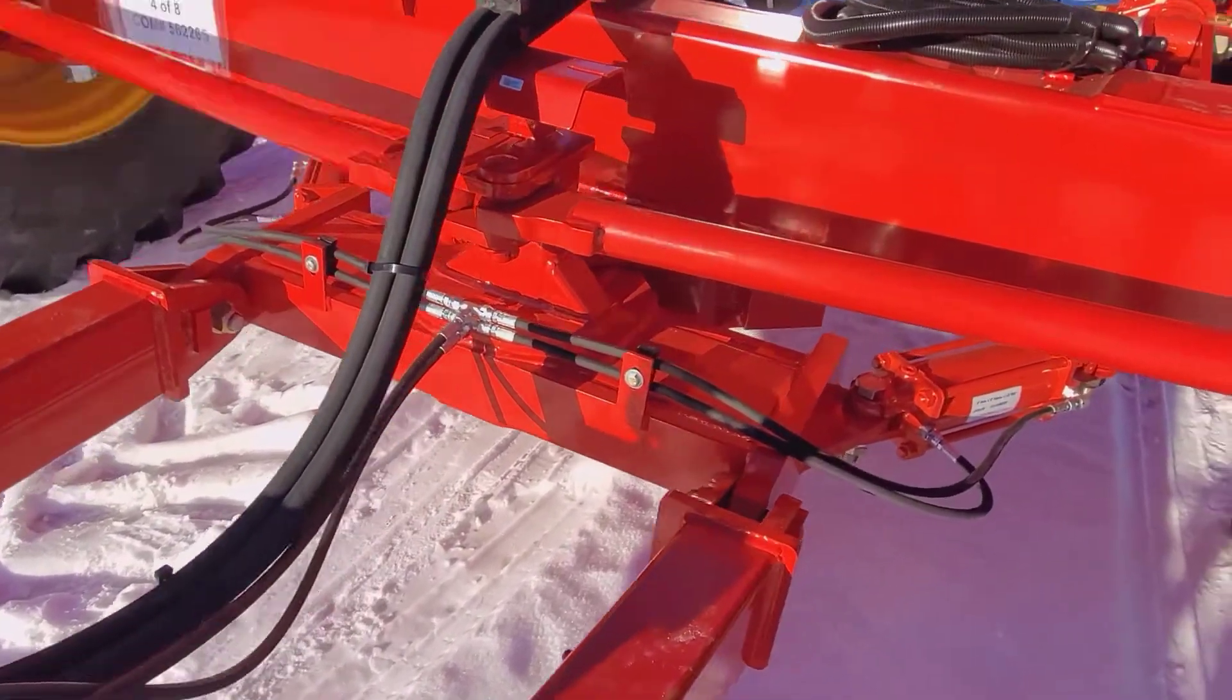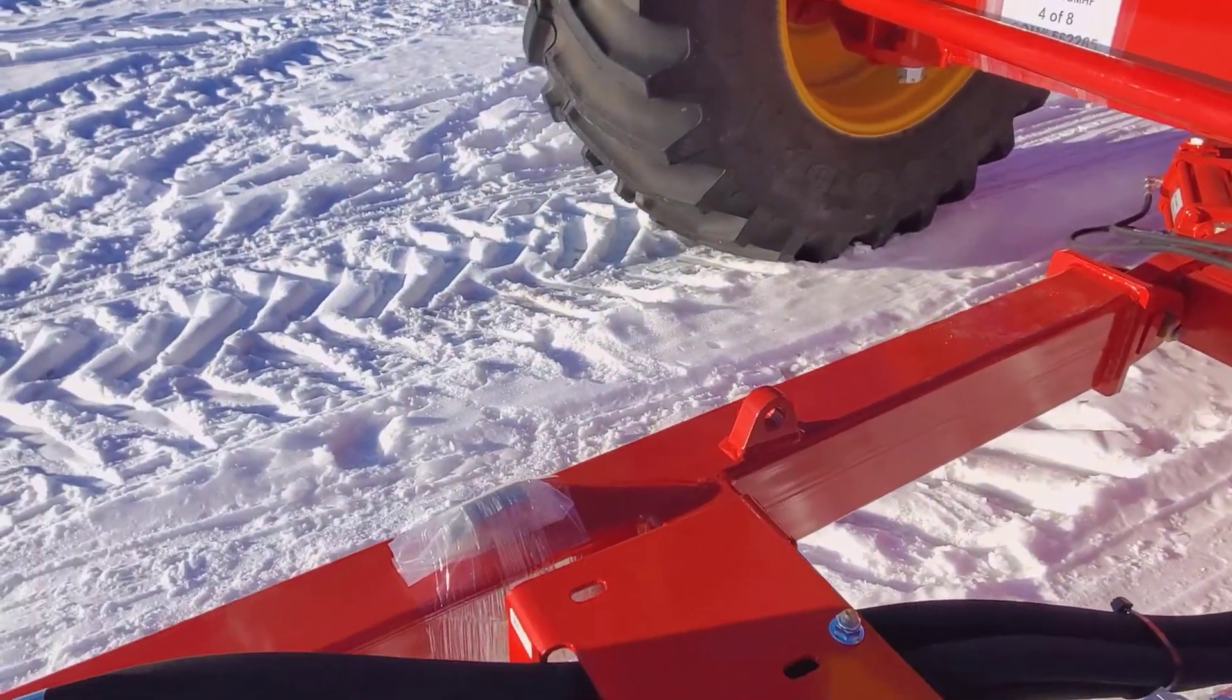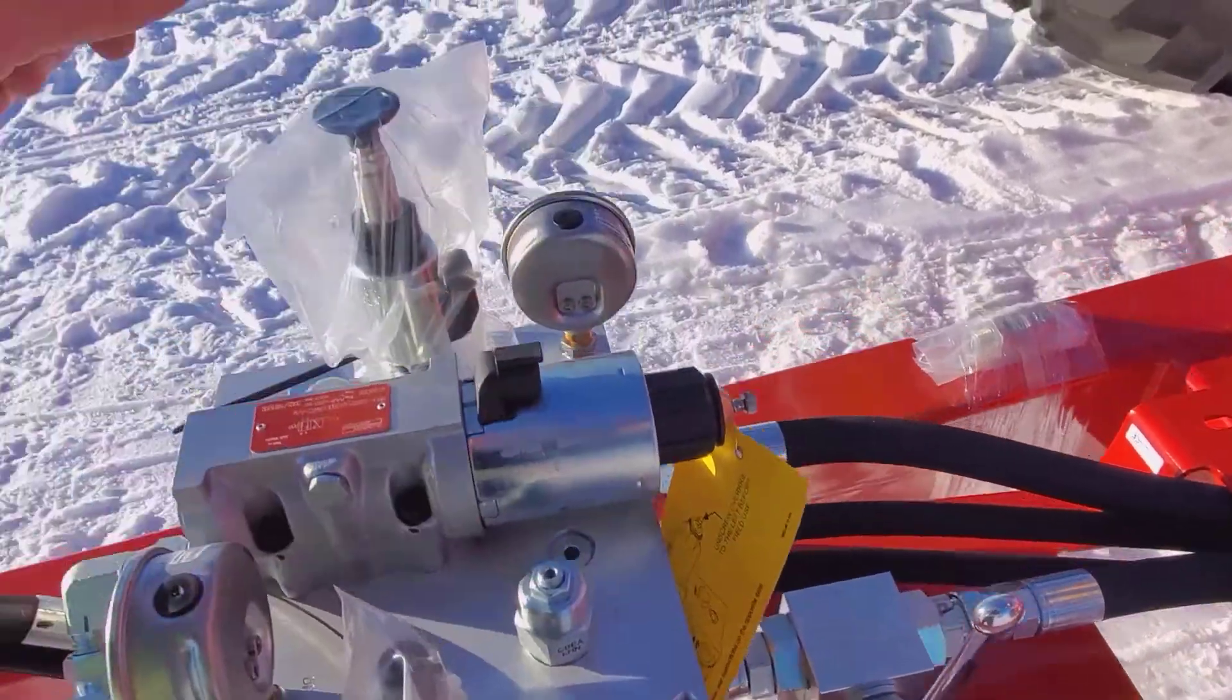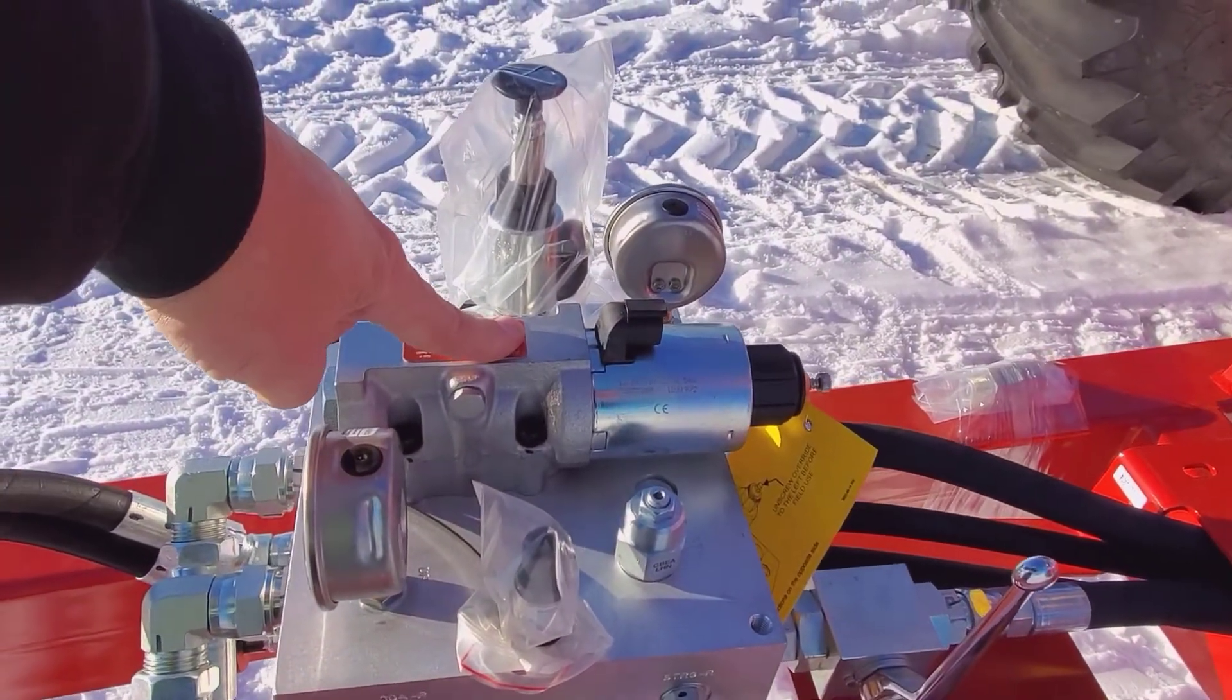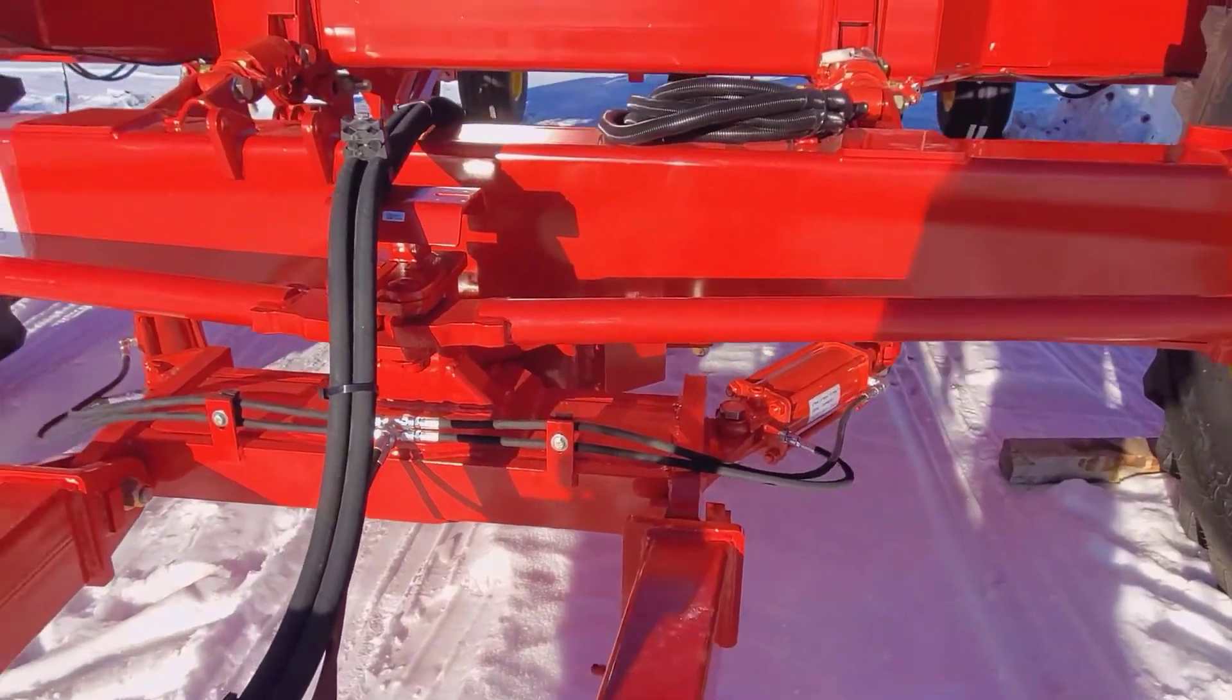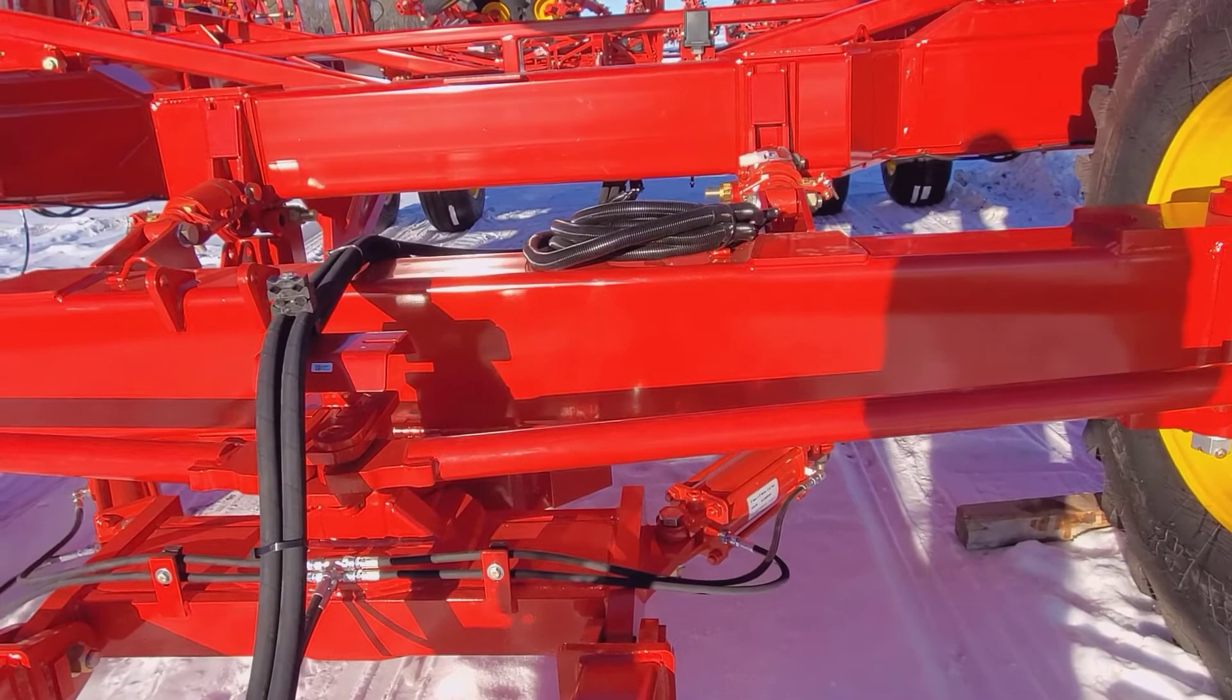So when the openers are down it extends cylinders and then the reverse happens. We pressure up the R port and return is the P port when we shift this valve here. That'll suck the rods in so that it'll relieve any excess pressure on those rods.